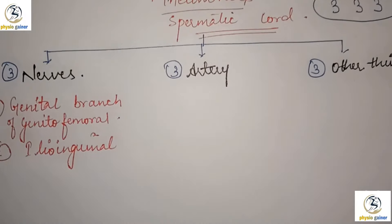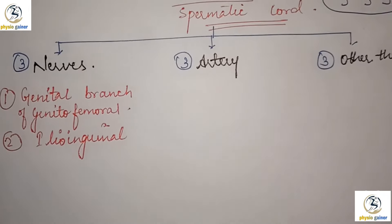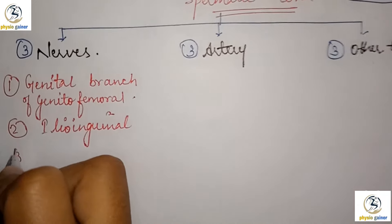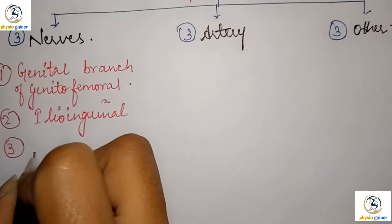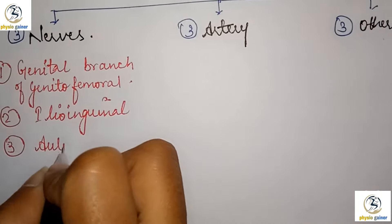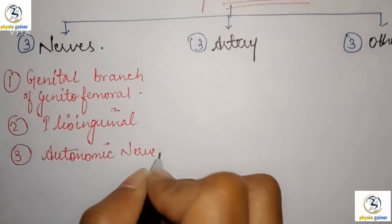Because this is the Spermatic Cord, which nerves are supplied? That is ileoinguinal. Last but not least, the third is the autonomic nerve.